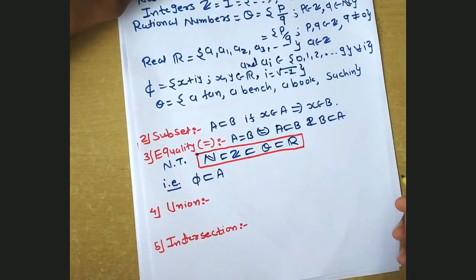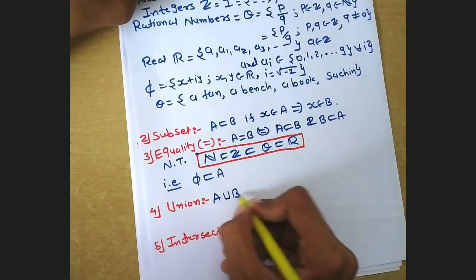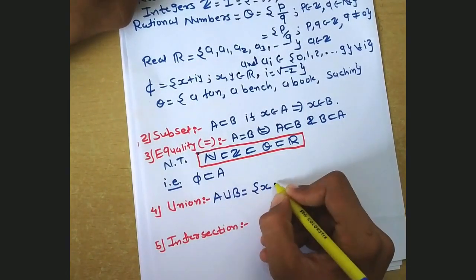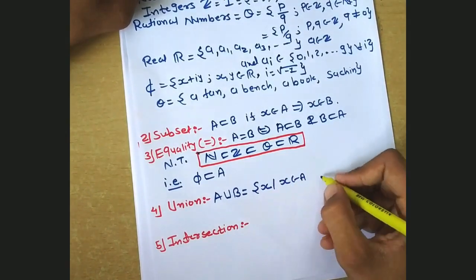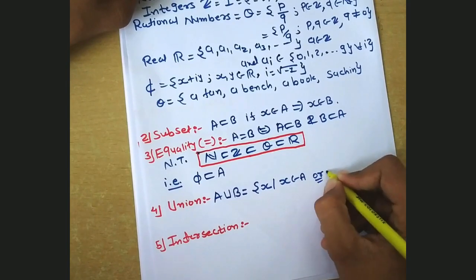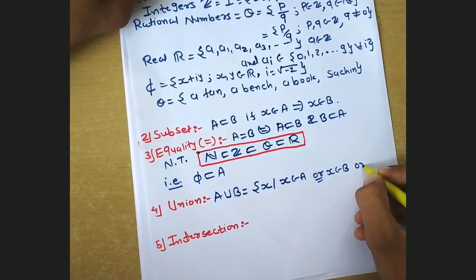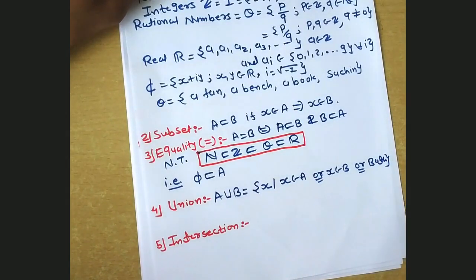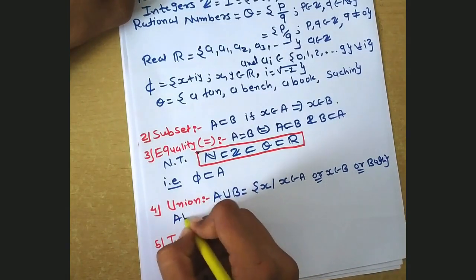Next, the union of sets. Suppose A and B are two sets, then we can write A union B as the set of all x where x belongs to A, or x belongs to B, or both.